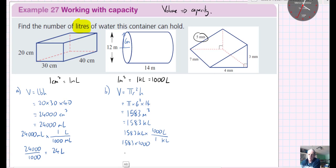So I'm going to do 1,583 times by 1,000, which is going to give me 1,583,000 liters.